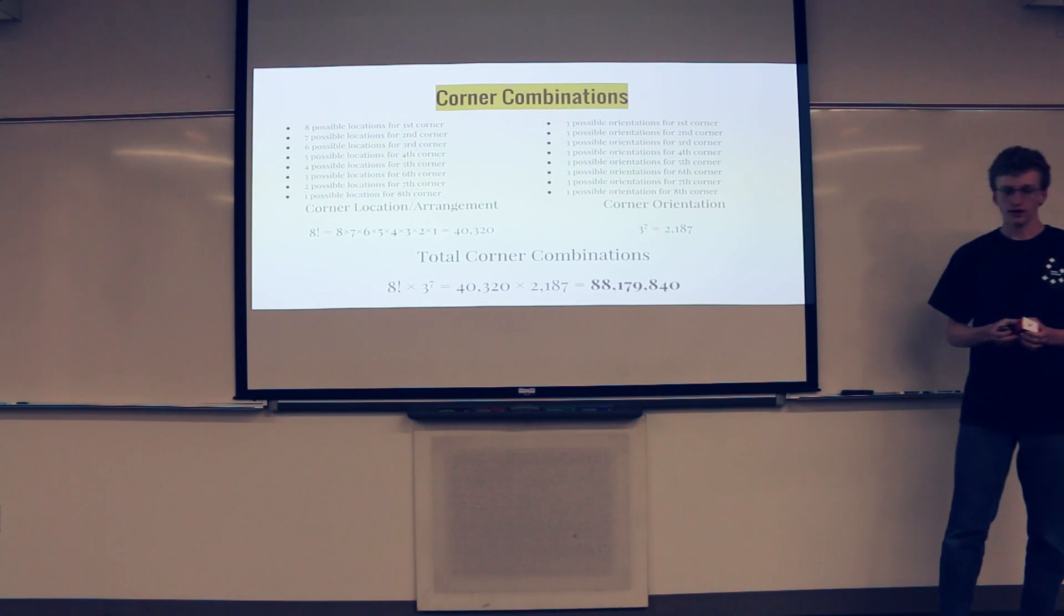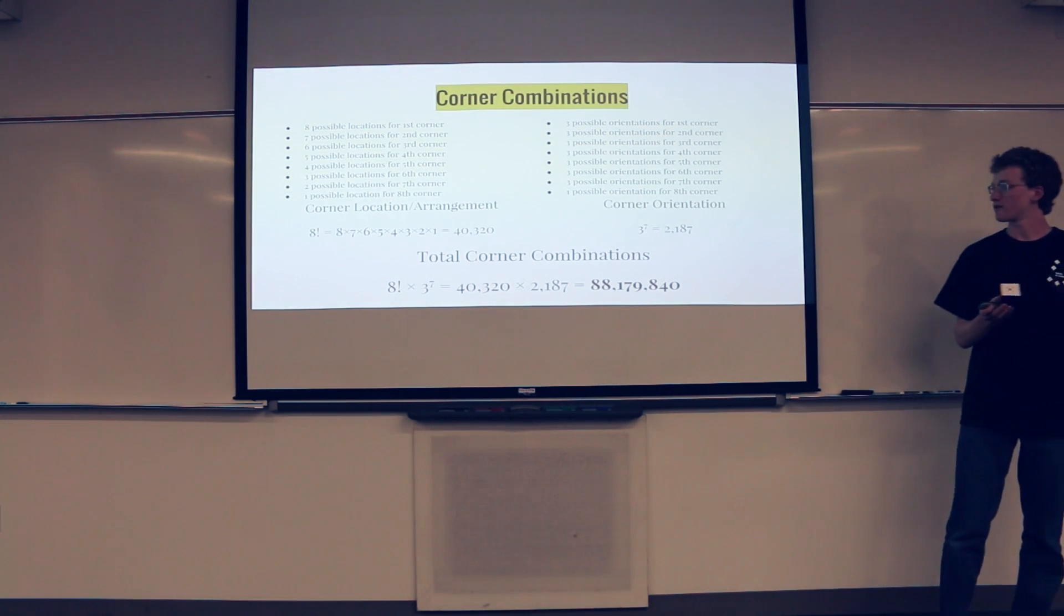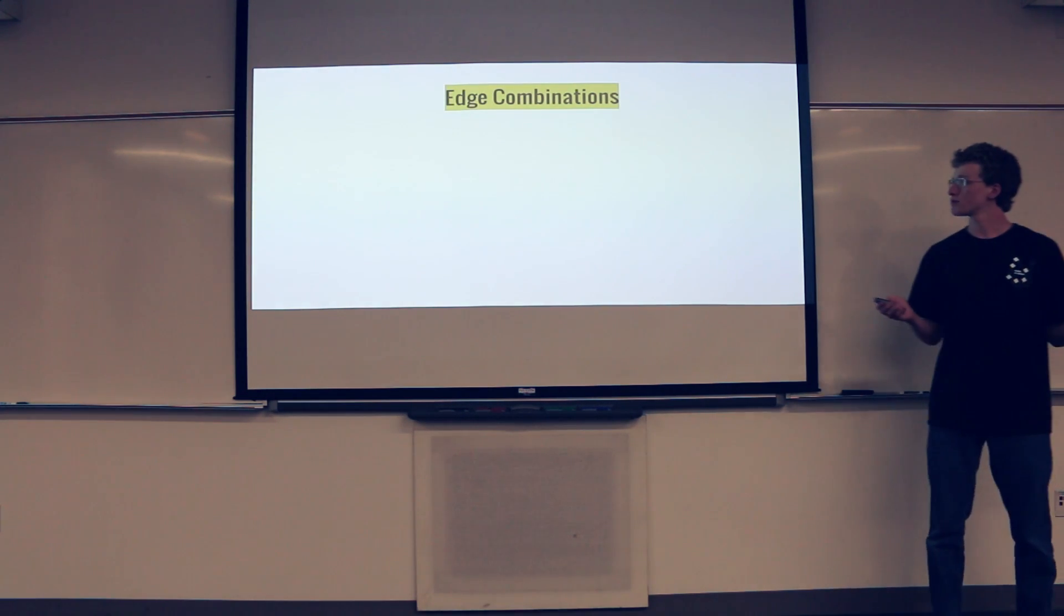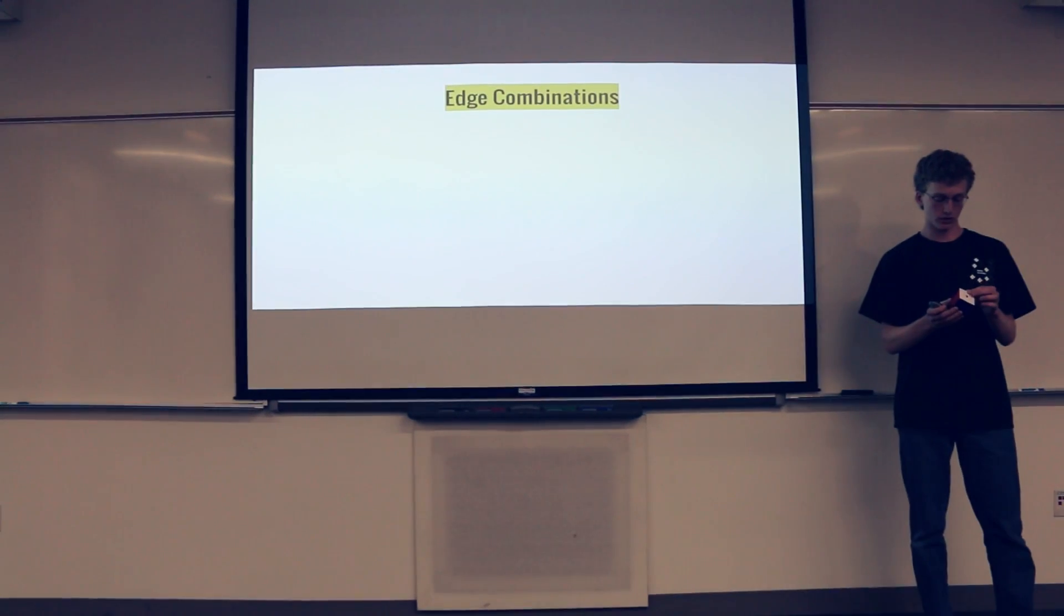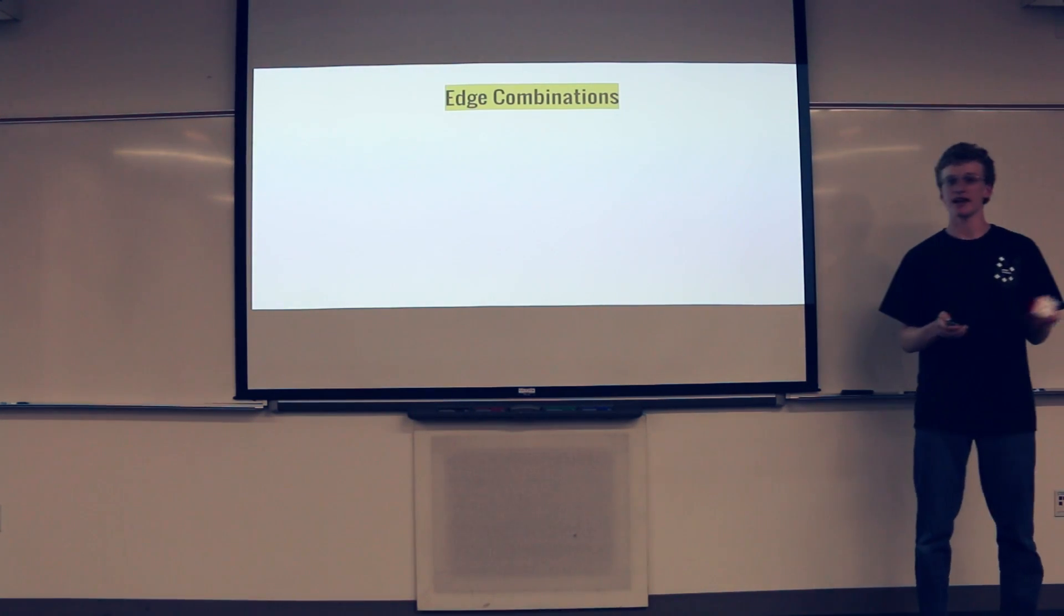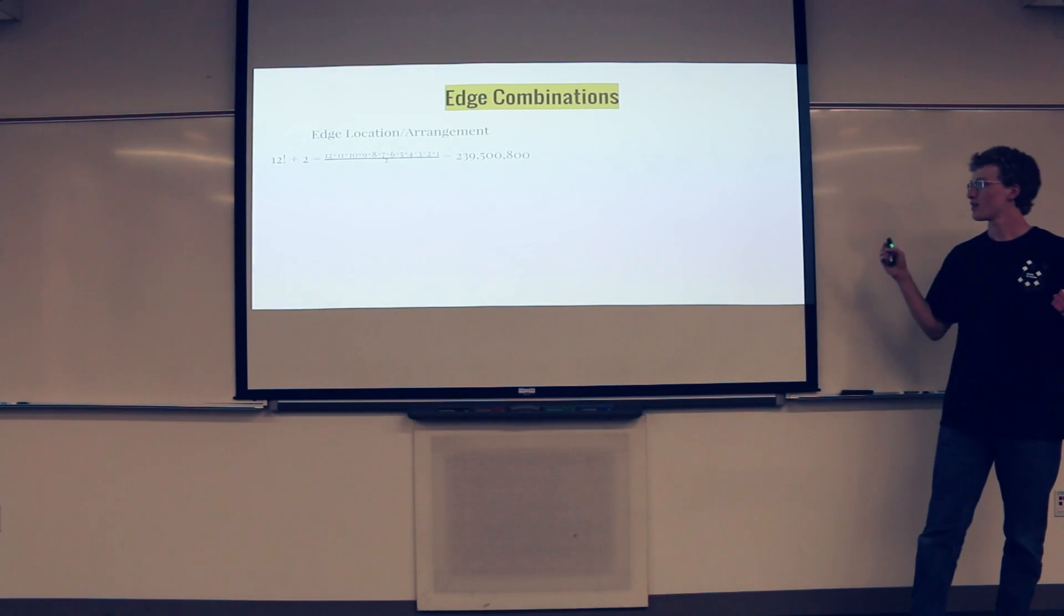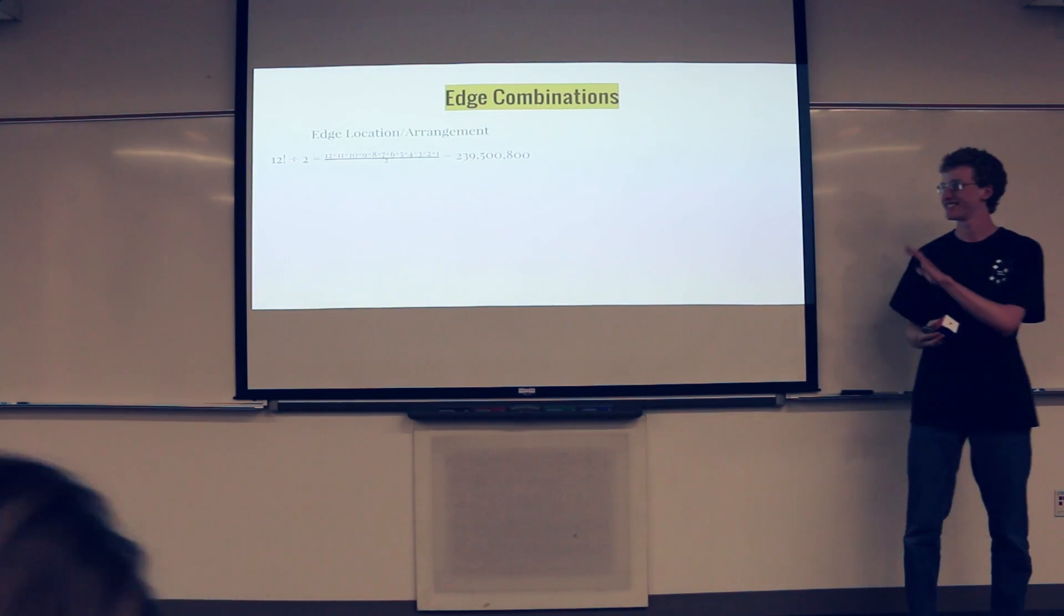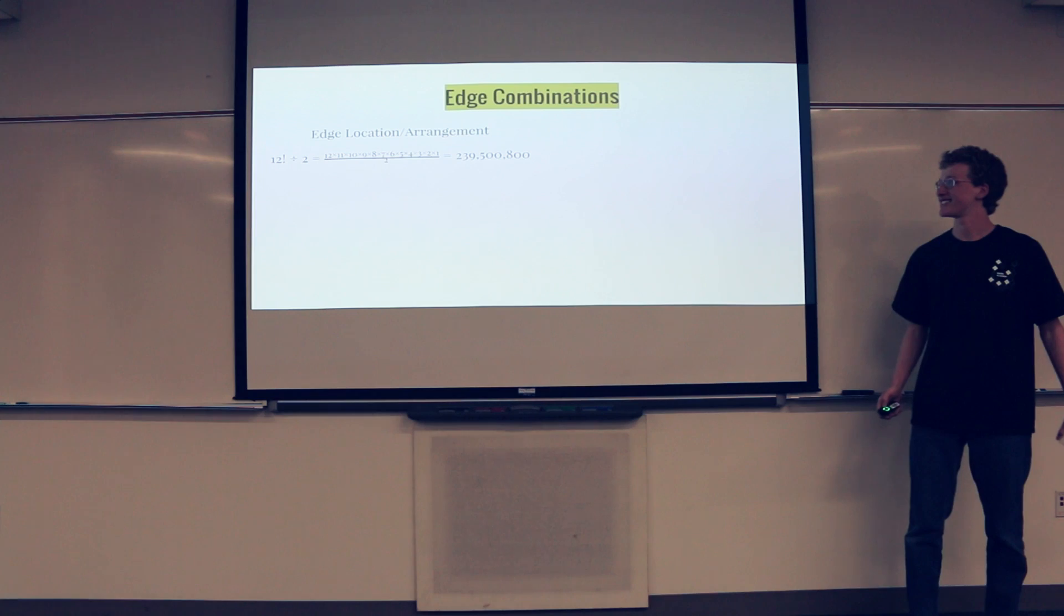So, for the location of the corners, it's eight factorial, which is 40,320. And the number of ways that they can be turned is three to the power of seven, and we multiply that together. To get this number, it's over 88 million, and that's just the ways that the corners can be arranged. So, if a cube basically was no corners, it would have this many combinations. Now, onto the edges, which follows very similar logic. There are 12 edges, so the location theoretically should be 12 factorial, because the corners have eight edges, and that was eight factorial. It's actually 12 factorial divided by two. The reason for that is, like, it's really complicated. It'd be a different presentation by itself. I even have trouble understanding it, so I just accept that.